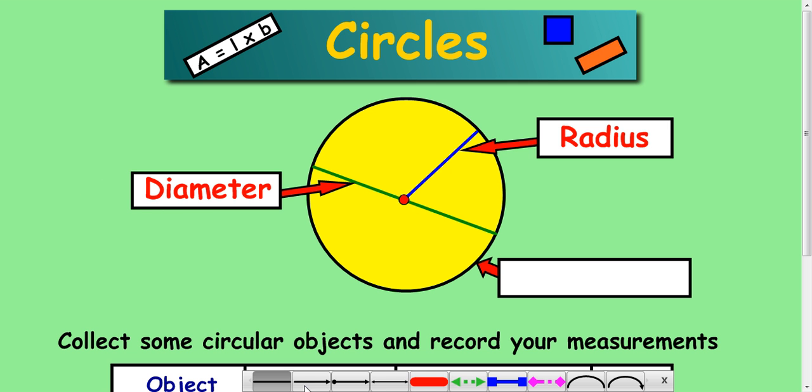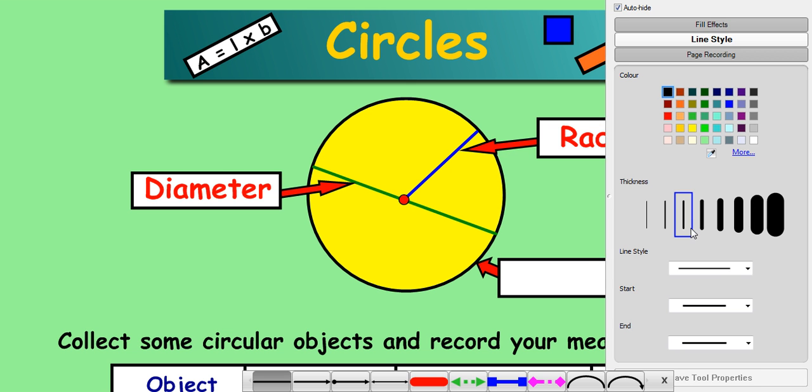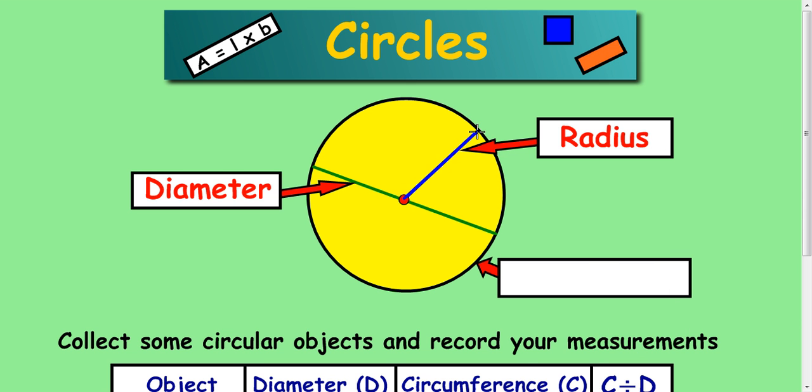Now one thing to notice about the diameter of the circle is that if you take a radius, which is this, the radius can be taken all the way around the circle like this. So there's a radius here, there's a radius there, there's a radius here. So this is also the radius.